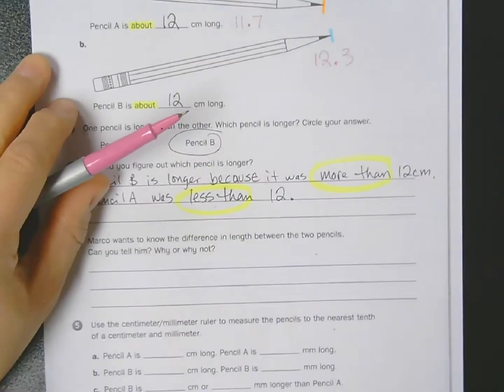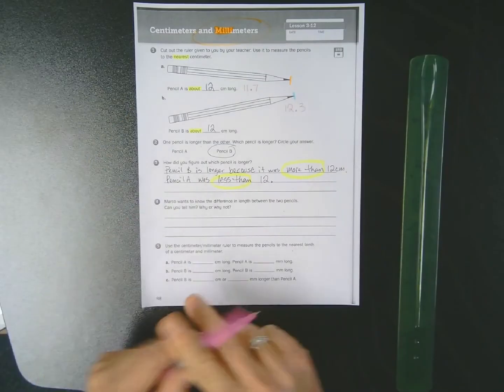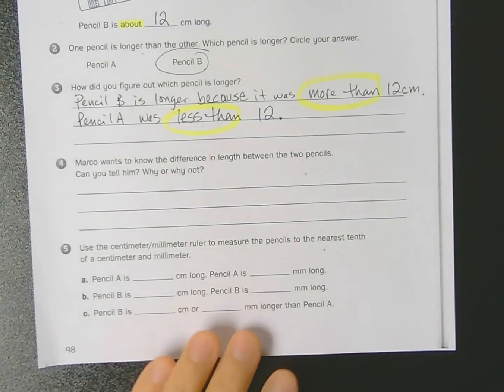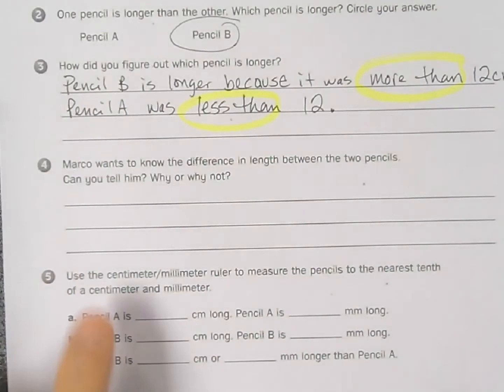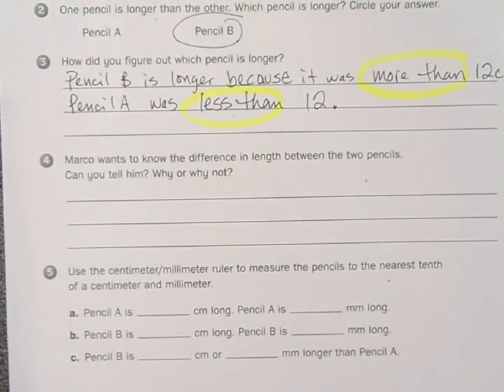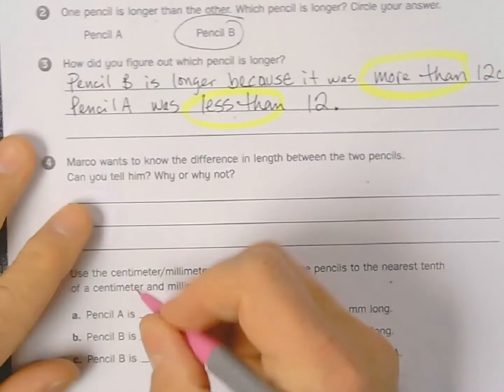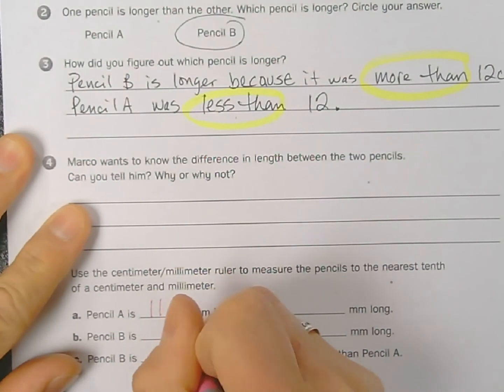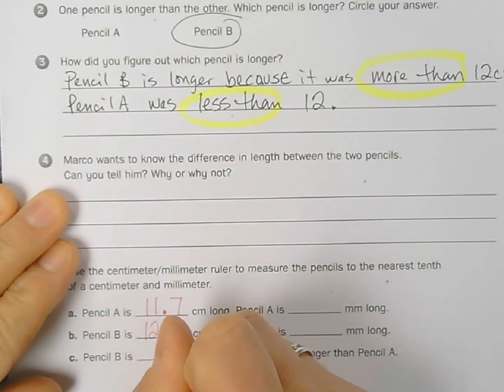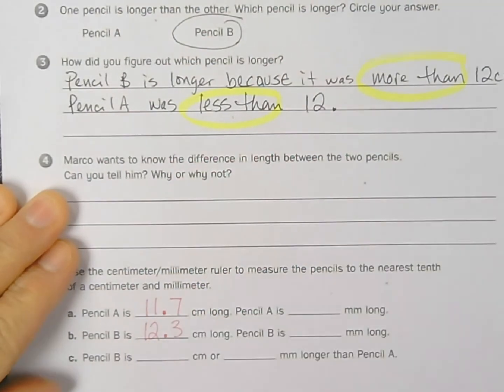So let's now take a look at the bottom, number five, we'll get back to four here in a sec. So it asks us to use the centimeter/millimeter ruler to measure the pencils to the nearest tenth of a centimeter and millimeter. So the measurement of pencil A is 11.7, the measurement for pencil B is 12.3.